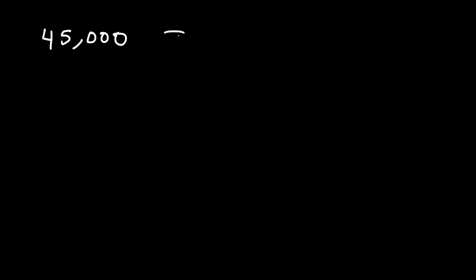So, let's say if we have the number 45,000 — how can we express this in scientific notation? You want to move the decimal in between the first two numbers, that is, between the 4 and 5. I'm going to move it 4 units to the left. So, 45,000 is equal to 4.5 times 10 to the 4.